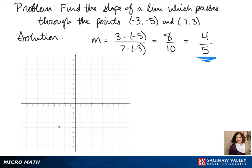When we plot these points, negative 3, negative 5, and 7, 3, and we connect those, this is what our line would look like.